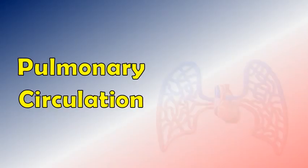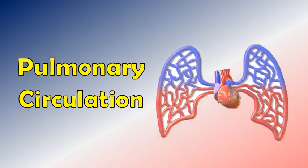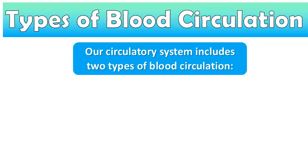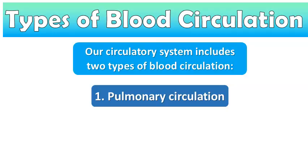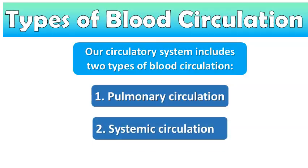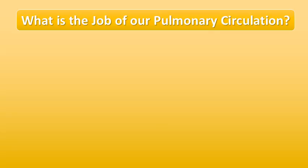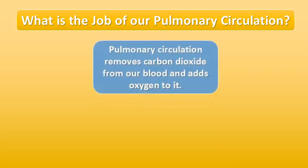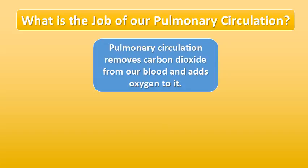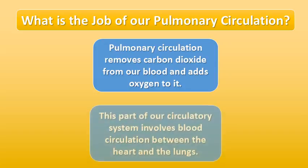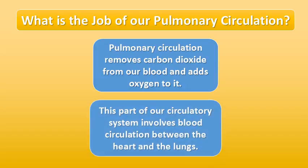Our circulatory system includes two types of blood circulation: pulmonary circulation and systemic circulation. In this video, we will discuss the basic process of pulmonary circulation. The job of our pulmonary circulation is to remove carbon dioxide from our blood and add oxygen to it.